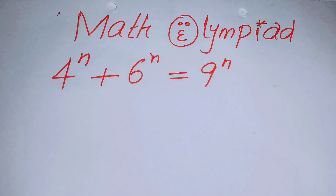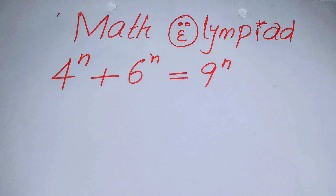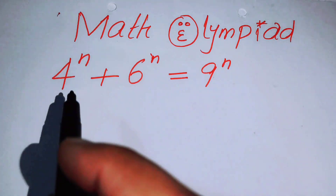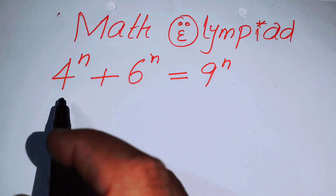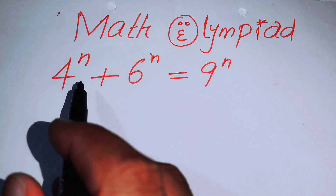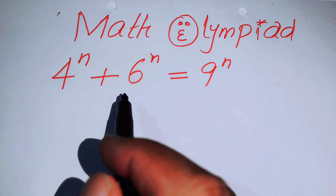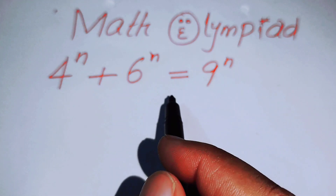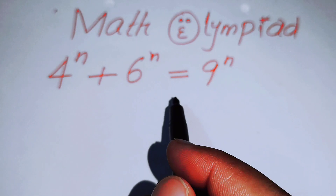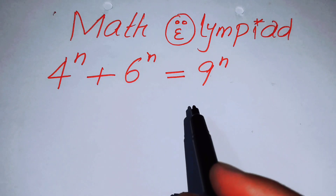Hello everyone, welcome back to the Map of Mathematics. In this video we are going to solve this algebra problem. We have the exponential equation in the form of 4 to the power of n plus 6 to the power of n equals 9 to the power of n.